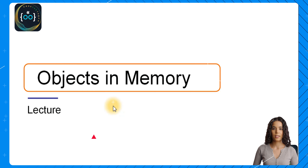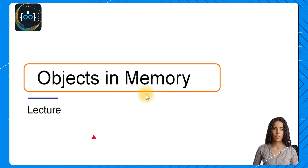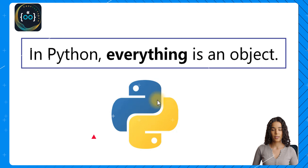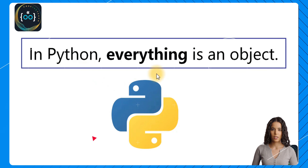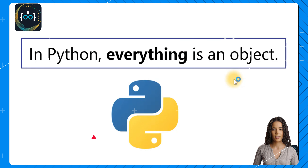Great work during the first part of the course! Now in this section we will start covering how objects are stored in memory and how this is related to your Python code. You might have heard this phrase before: in Python everything is an object, and this is actually true. Let's see why with some examples.